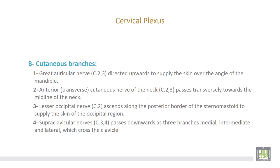The cutaneous branches of the cervical plexus: number one, the great auricular nerve, directed upward to supply the skin over the angle of the mandible — root value C2 and C3. Number two, the anterior or transverse cutaneous nerve of the neck, also C2 and C3, passes transversely towards the midline of the neck. Number three, the lesser occipital nerve arises only from C2, running along the posterior border of the sternomastoid to the scalp skin of the occipital region. Number four, the supraclavicular nerves from C3 and C4 pass down as three branches — medial, intermediate, and lateral — which cross the clavicle.